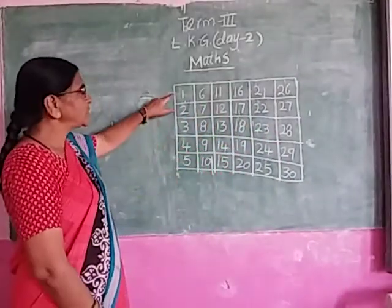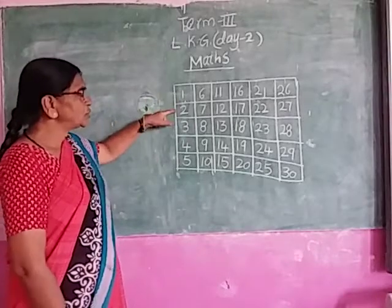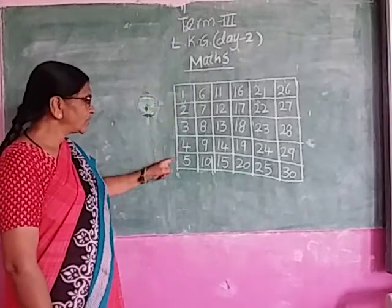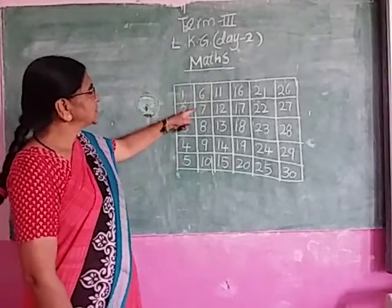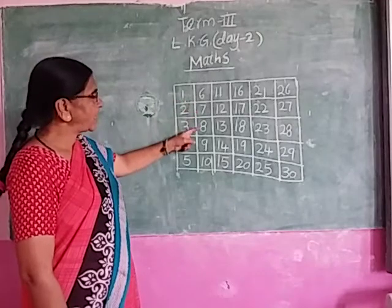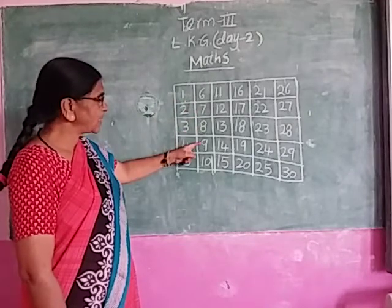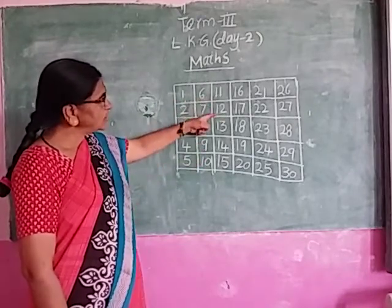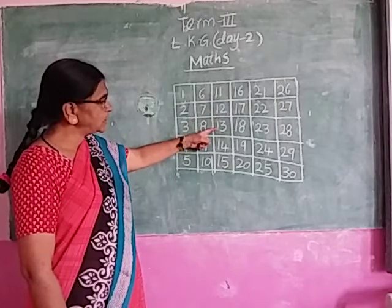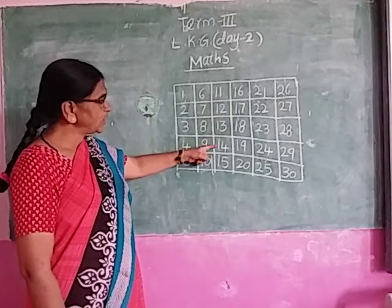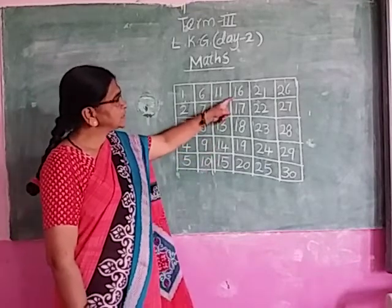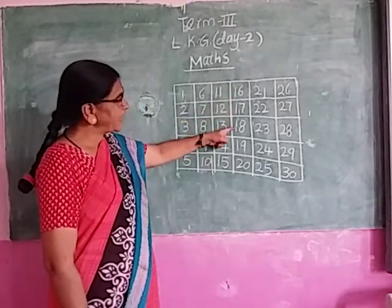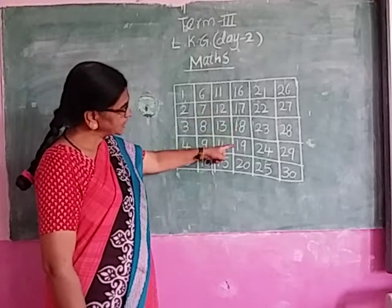Look at my children. 1, 2, 3, 4, 5, 6, 7, 8, 9, 10, 11, 12, 13, 14, 15, 16, 17, 18, 19.